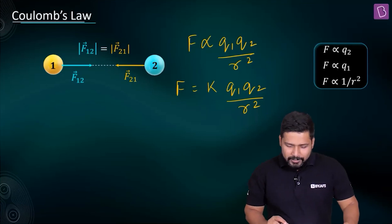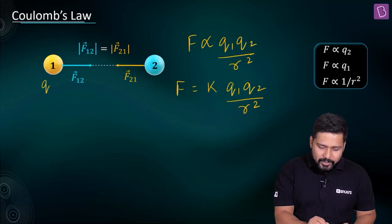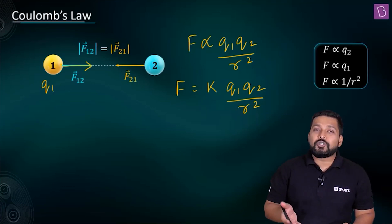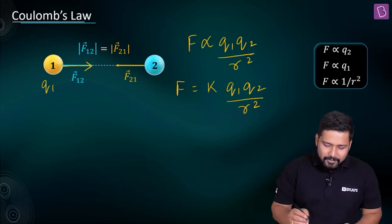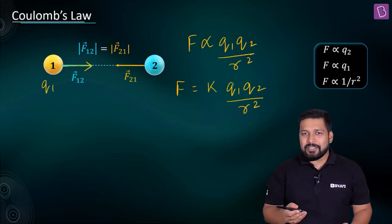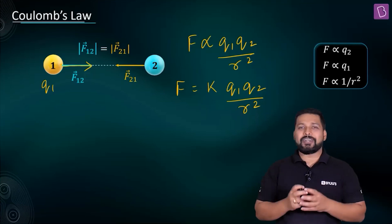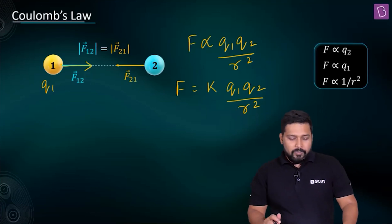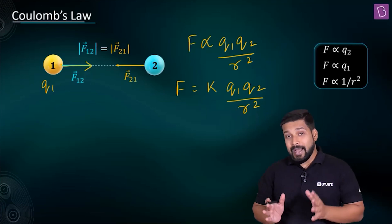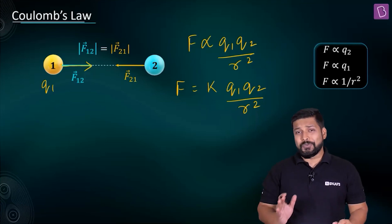If charge Q1 is attracting charge Q2, there will also be an attractive force on Q1 due to Q2. If one is positive and the other negative, A attracts B and B also attracts A — one attracts two and two attracts one. The forces are equal in magnitude and opposite in direction.